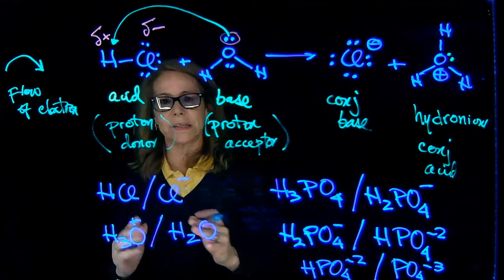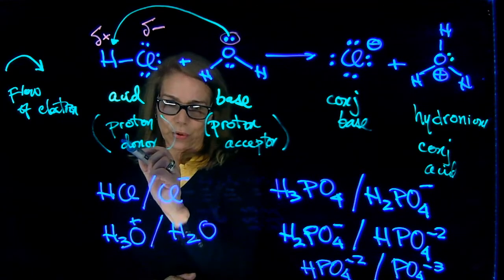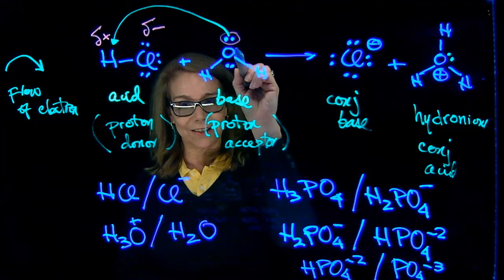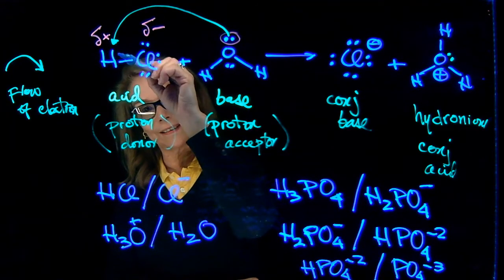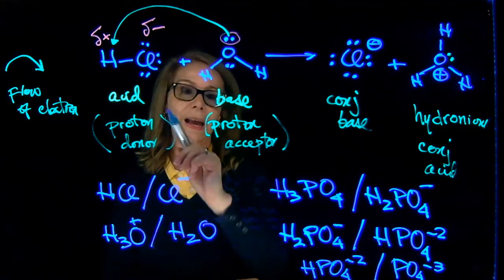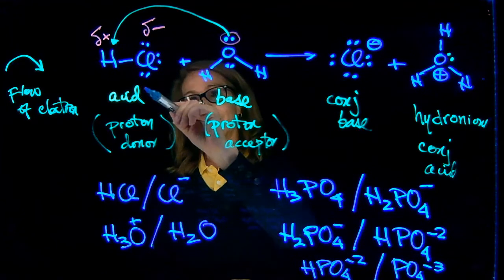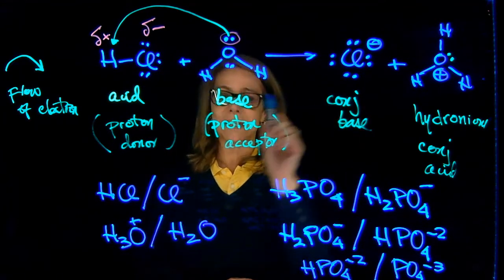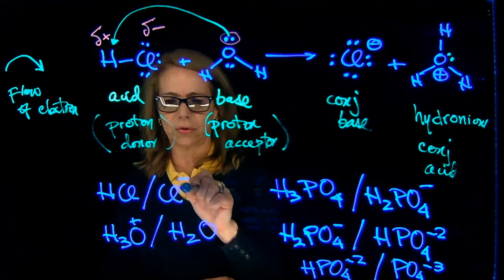But conceptually then, acid is a proton donor, base is a proton acceptor. That is electron rich. Here the proton is the electron deficient species. In doing this process, the acid became a conjugate base. Here's my pair: acid-conjugate base.